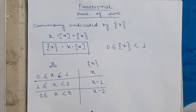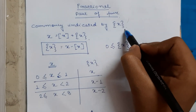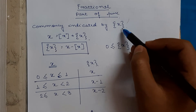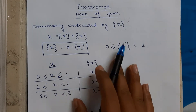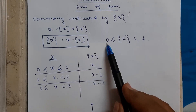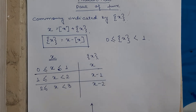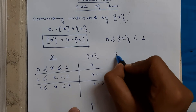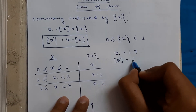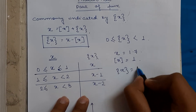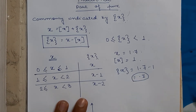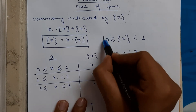Now the fractional part of x, denoted by curly braces {x}, can also be written as x minus the floor of x (box of x). Its range lies between 0 and 1. For example, 1.7 — the fractional part is 0.7. For any example, it will always return a value between 0 and 1. It can be zero when x is an integer, but it can never be 1.